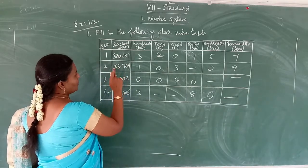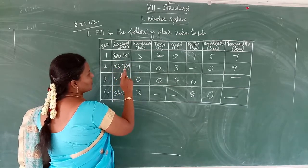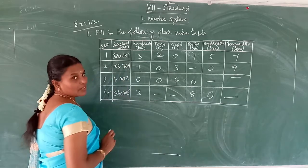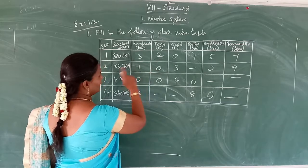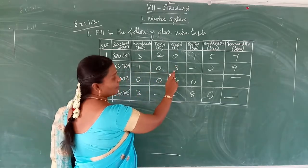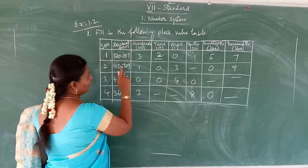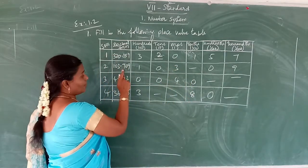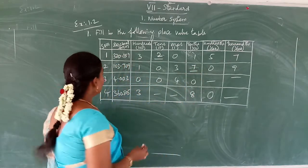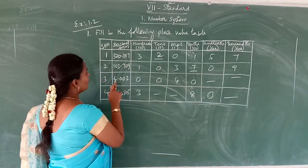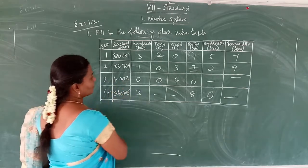See the second question. Here the whole part is 103 and decimal part is 709. The hundreds place has one, the tens place has zero, and the ones place has three. So what comes in the tenths place? That is seven. So equal to seven.